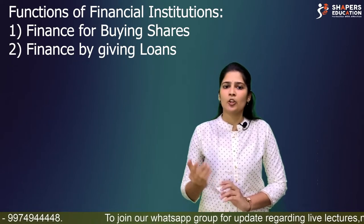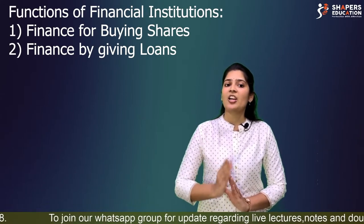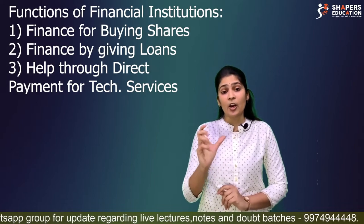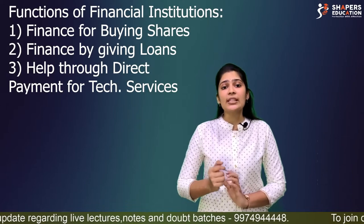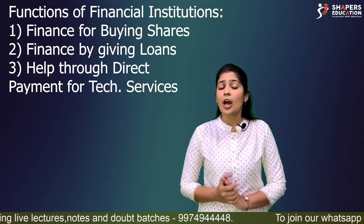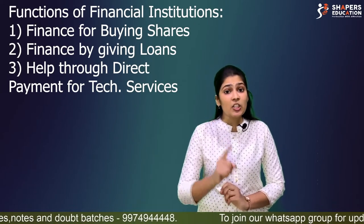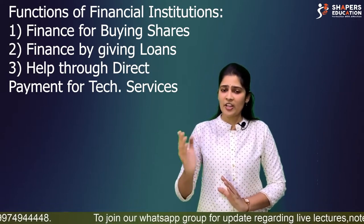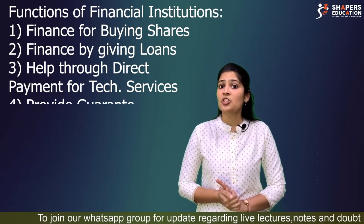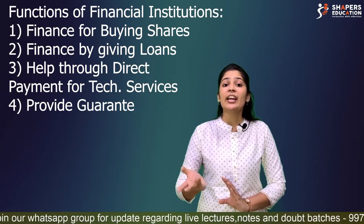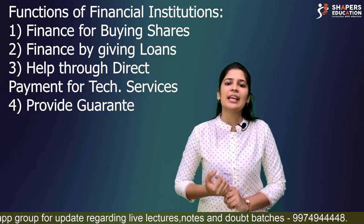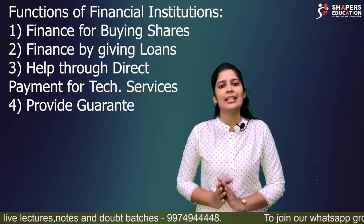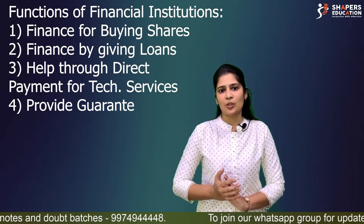The second function is to provide finance by giving loans — this is the main objective of financial institutions. Third, they help through direct payment for technological services — if a company needs expensive technology and lacks funds, financial institutions make direct payment on behalf of the company and recover it later. Fourth, they provide guarantees — financial institutions can act as guarantors, assuring lenders that the company will repay, and promising to cover repayment if the company cannot.